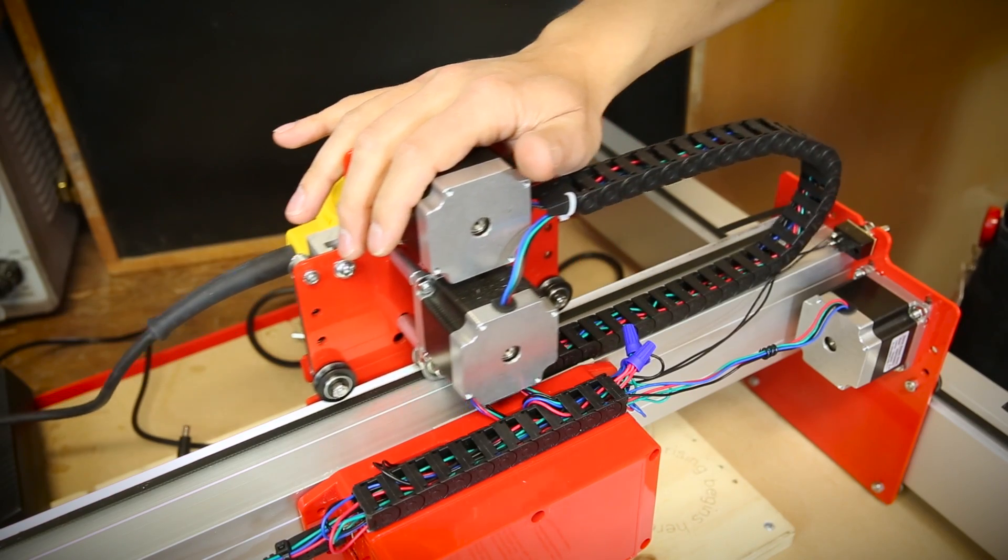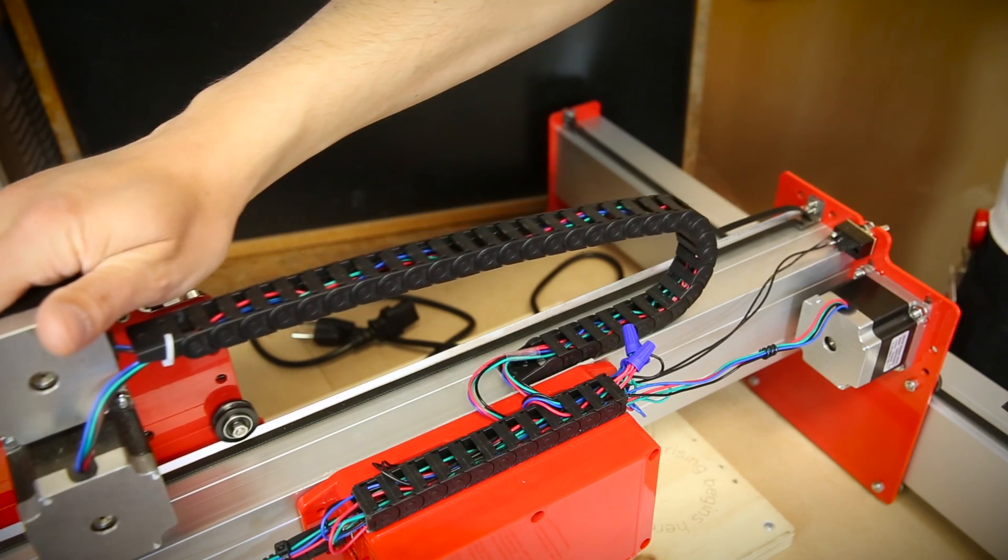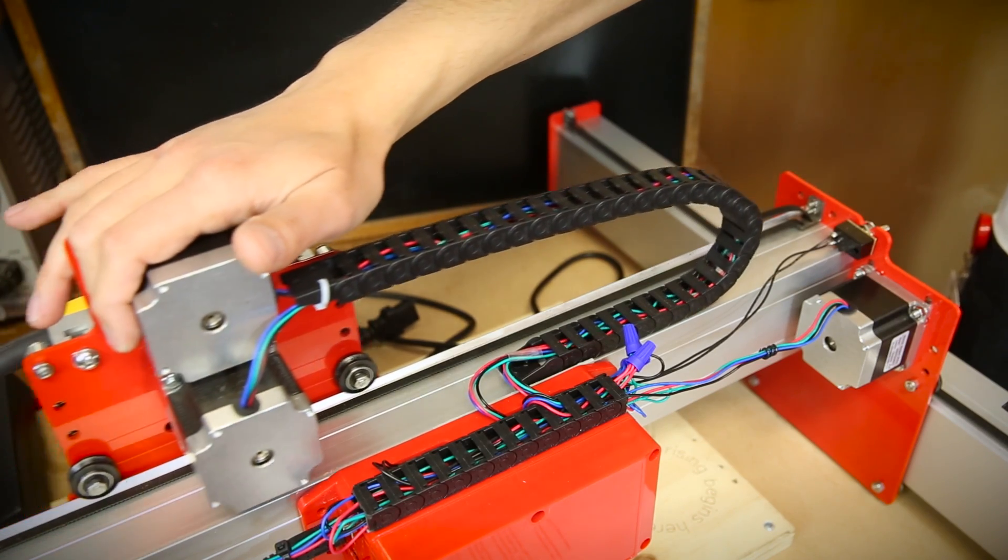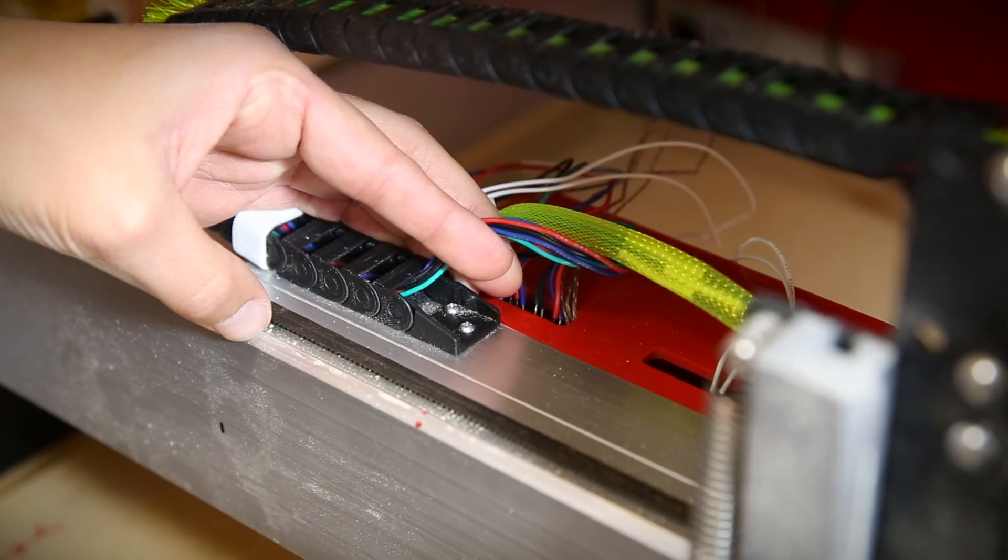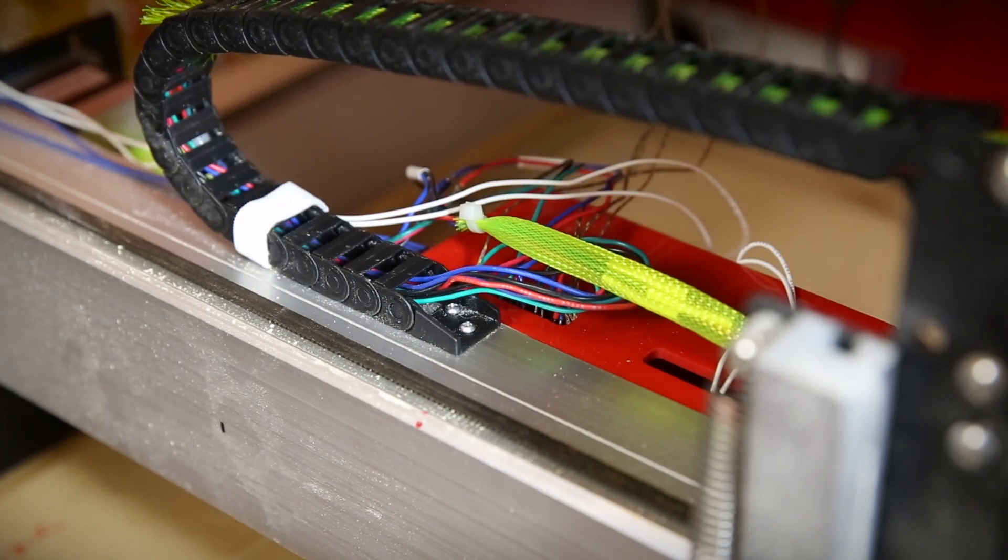Our initial release didn't have any wire management, so we've included cable carriers in the Motion Control and Deluxe kits. Here on the prototype, I've drilled and tapped for 440 hardware, which works but was difficult due to the thickness of the rail.